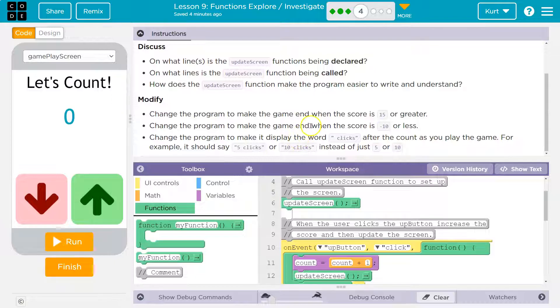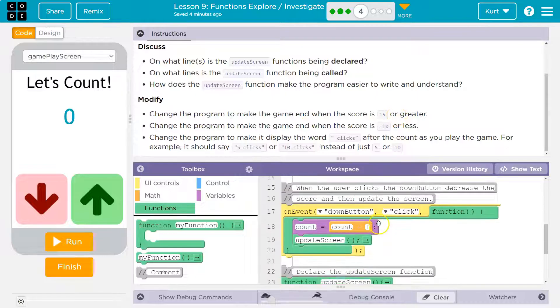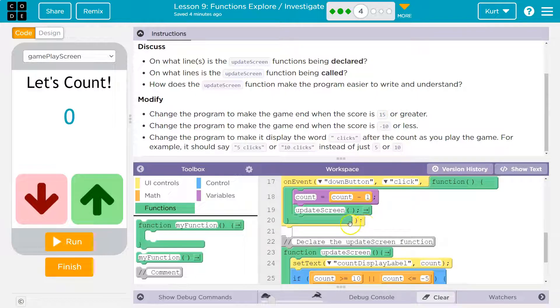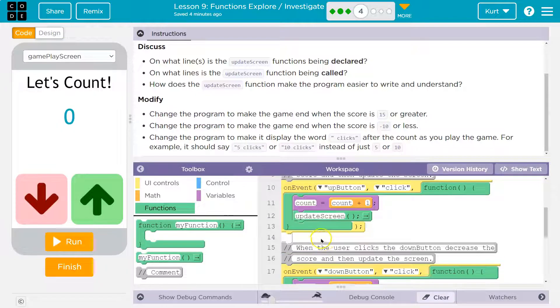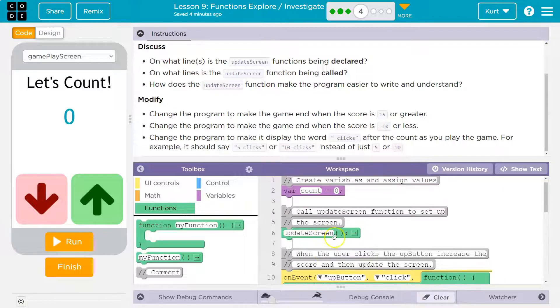Change the program to make the game end when the score is 15 or greater. So the game needs to end. Okay. Change the program to make the game end when the score is less than negative 10. Okay.